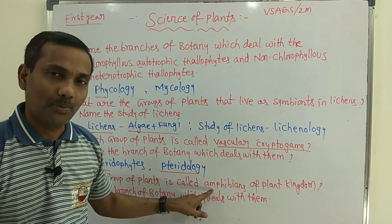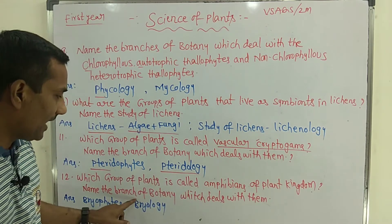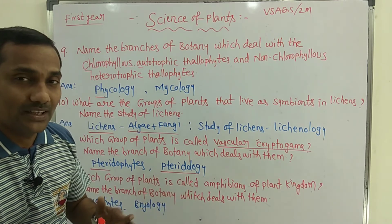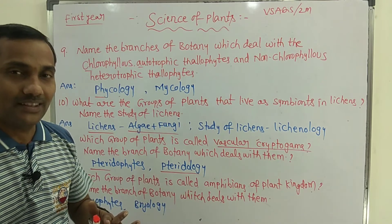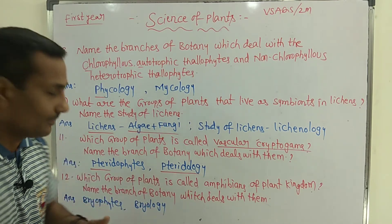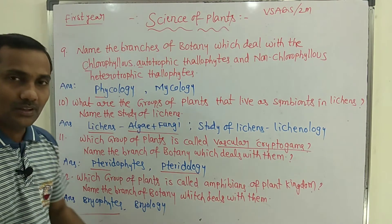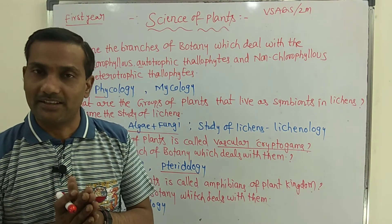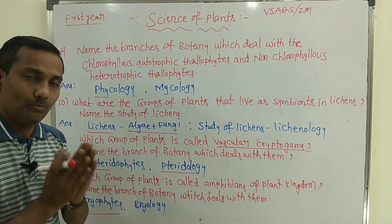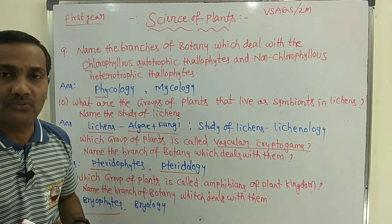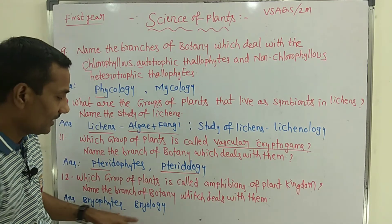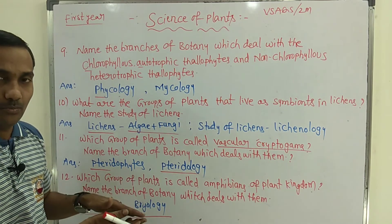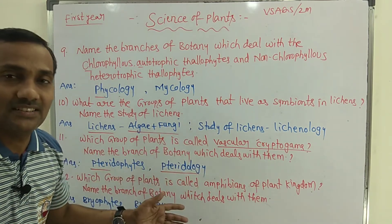Twelfth question: which group of plants is called the amphibians of the plant kingdom, and name the branch of botany which deals with them? Bryophytes are called the amphibians of the plant kingdom. The branch of botany that describes bryophyte plants is called Bryology.